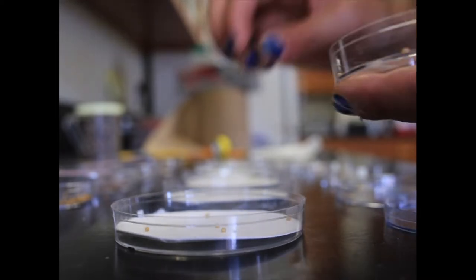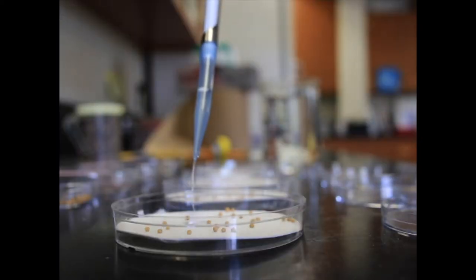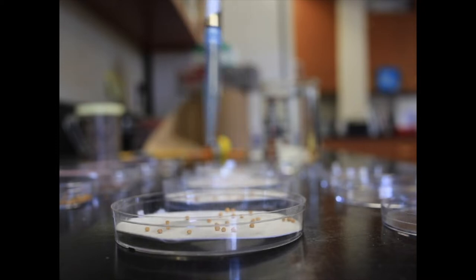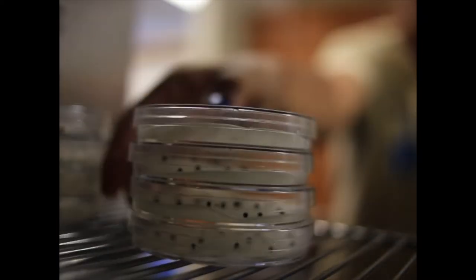Next, we placed them in petri dishes lined with blotter paper and moistened them with four milliliters of water before placing them in an incubator.